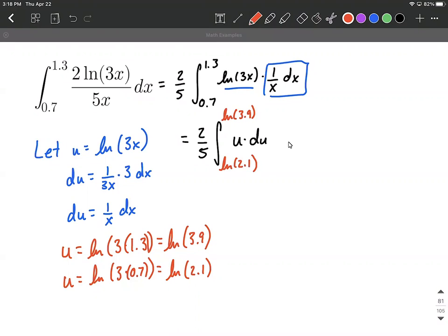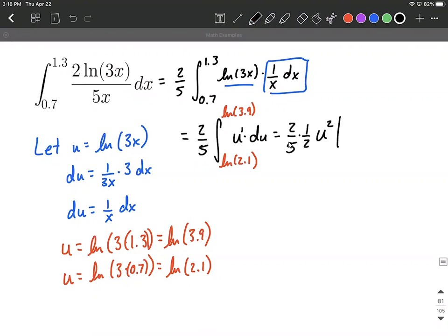All right, next, let's go ahead and integrate. We haven't done that yet. All right, so the two fifths comes along. We're gonna go u. It was raised to the first power here. So we're gonna use the power rule and increase the exponent by one, and then multiply by one over our new exponent out in front.